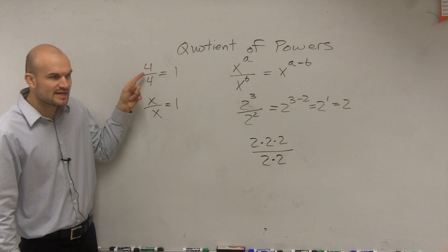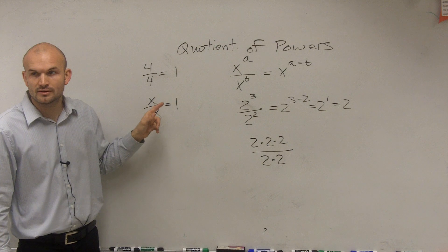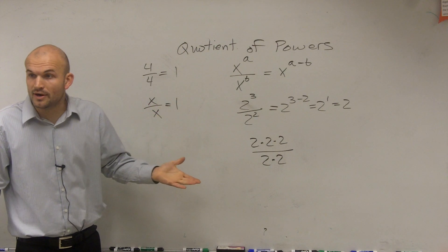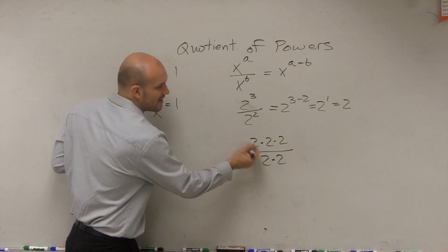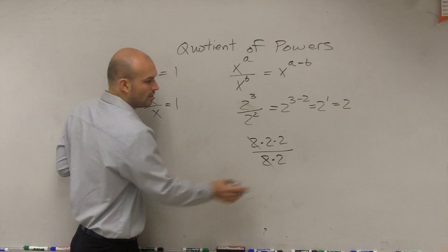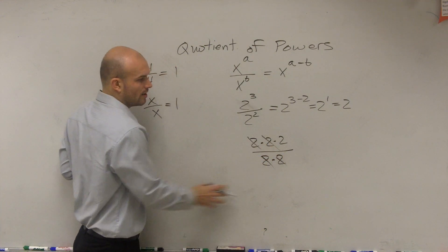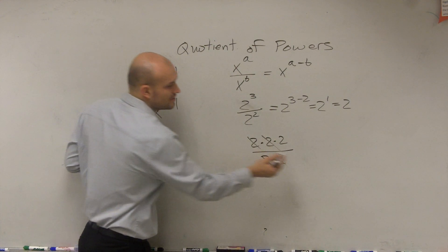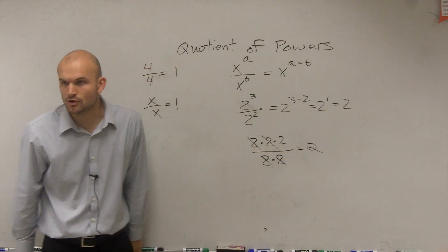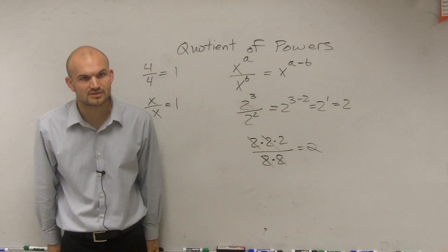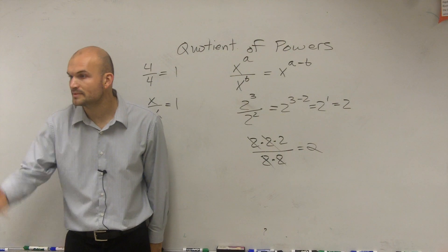Now, remember, what happens when you take a term and divide it by itself? It divides into 1, right? So how many pairs do we have that do that? 2 divided by 2 goes to 1. 2 divided by 2 goes to 1. And what are we left with? 2. So do you guys see how we can apply the quotient rule, how it works with the real numbers?